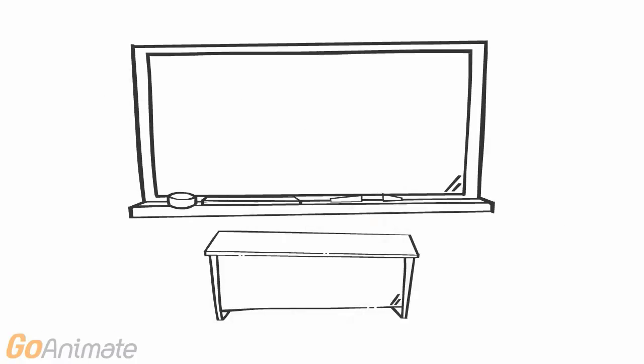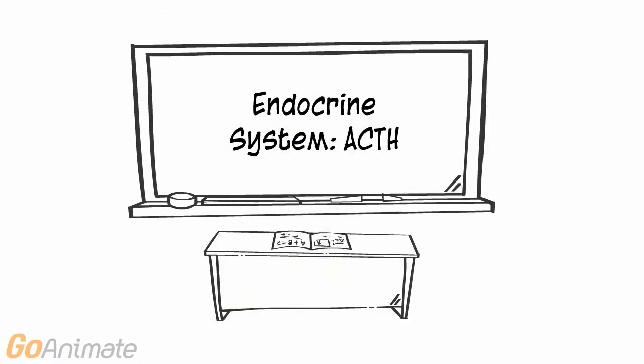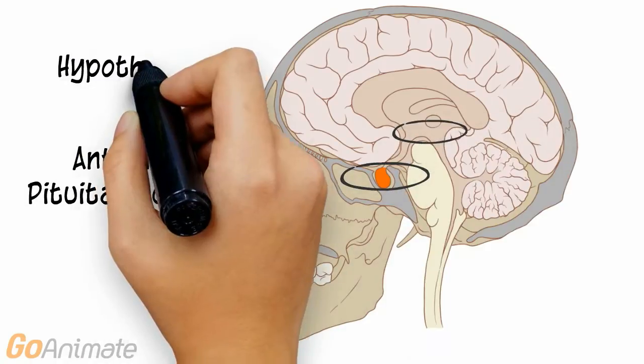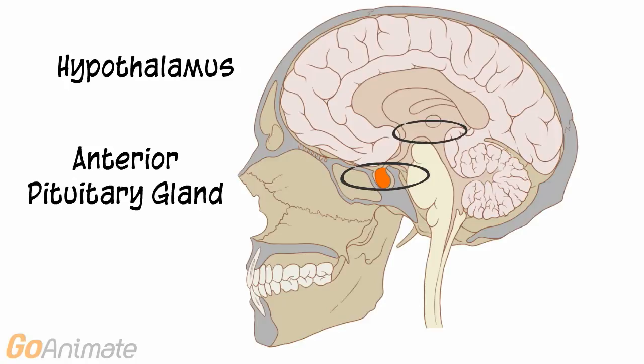Let's learn about Adrenal Corticotropin Hormone or ACTH. ACTH is secreted by the pituitary gland which is linked to the hypothalamus.